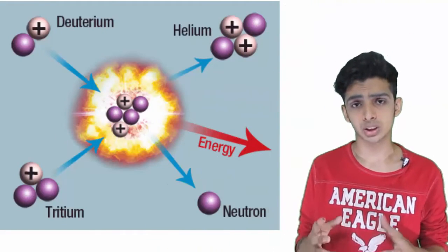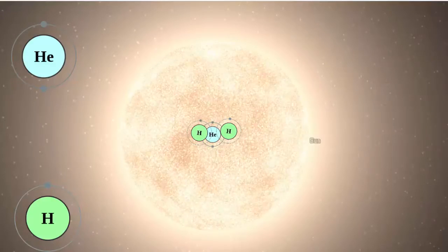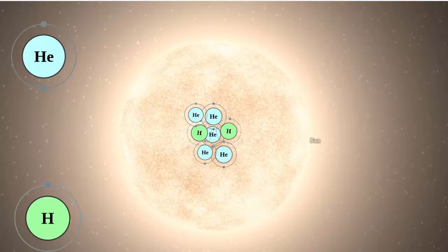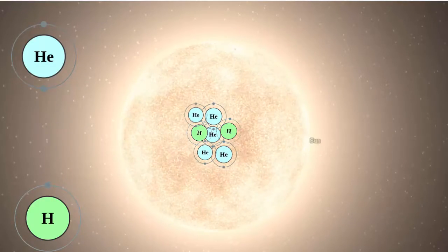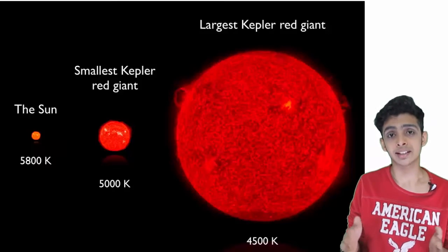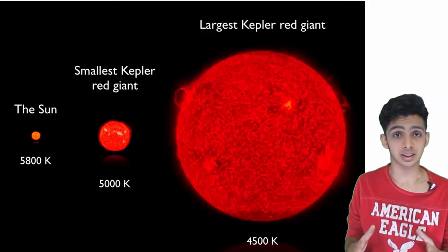Nuclear fusion powers the star for most of its life. Energy is generated by fusing hydrogen atoms in the core of a main sequence star. As the preponderance of atoms at the core becomes helium, a star like the sun begins to fuse hydrogen along a spherical shell surrounding the core. This process causes the star to gradually grow in size, passing through the sub-giant stage until it reaches the red giant stage.